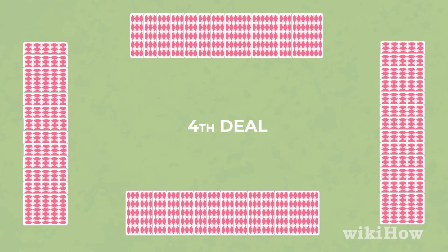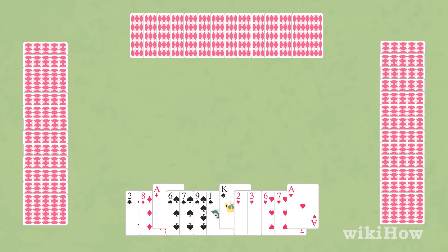Players don't pass any cards on the fourth deal. Whoever has the two of clubs goes first and they play a card in a suit of their choice face up.